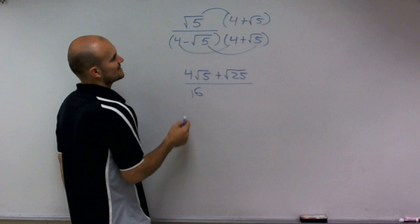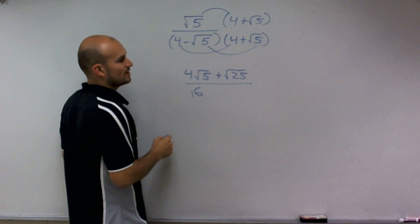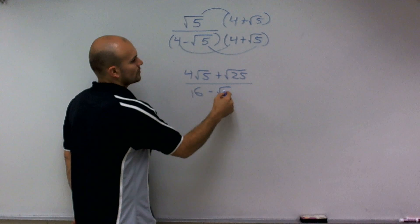4 times 4 is going to give me a positive 16. Negative square root of 5 times square root of 5 is going to give me a negative square root of 25.